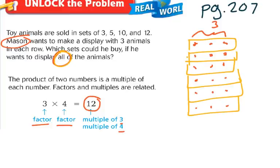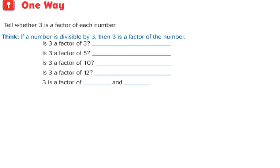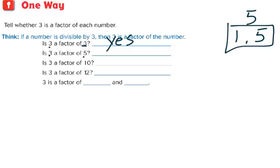We can think about this problem two different ways. One way is to ask: is 3 a factor of that number? Is 3 a factor of 3? Yes, the number is always going to be a factor. Is 3 a factor of 5? We'd have to find factors of 5: 1 times 5 gives us 5, and that's it. So 3 does not fall on this list — 3 is not a factor of 5.